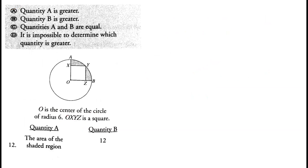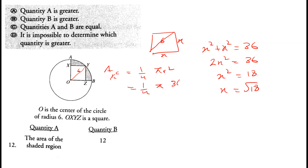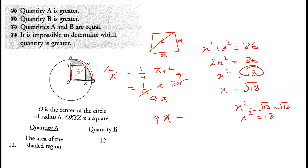O is the center of a circle with radius 6, and OXYZ is a square. Since the radius is 6, we use the diagonal: x² + x² = 36, so 2x² = 36, x² = 18, and x = √18. The shaded area is the area of a quarter circle minus the area of the square. The quarter circle area is (1/4)π(6²) = 9π, and the square area is x² = 18.